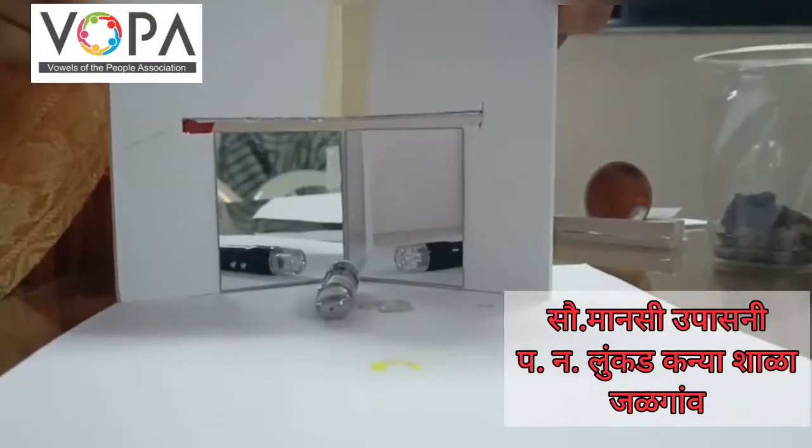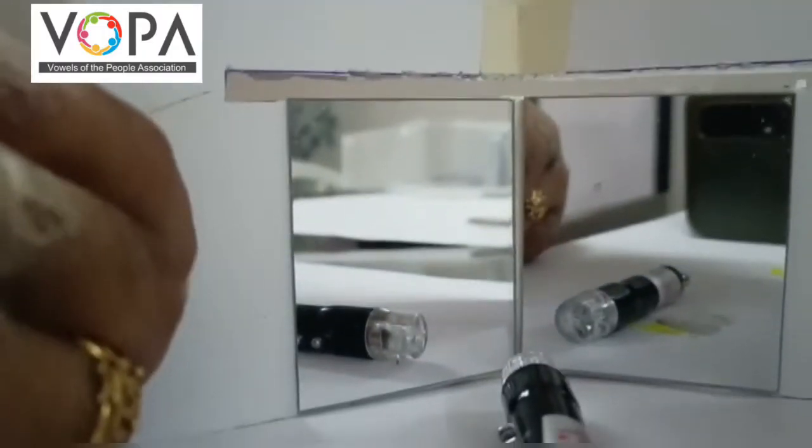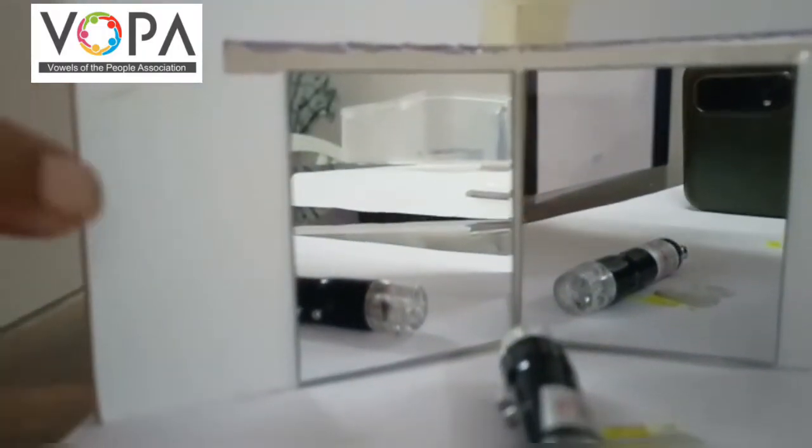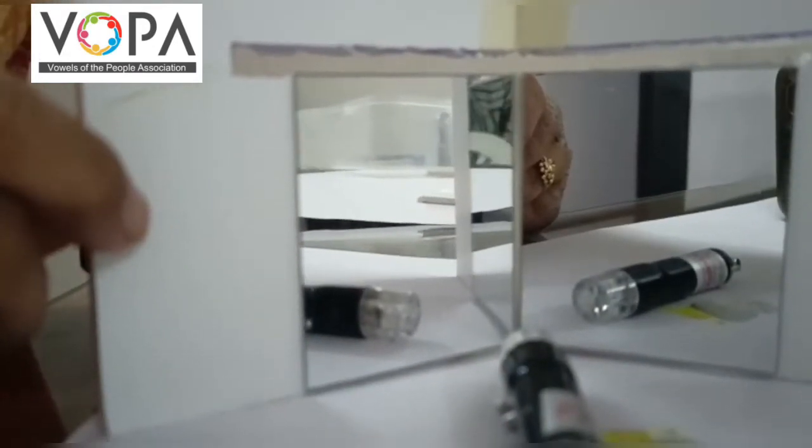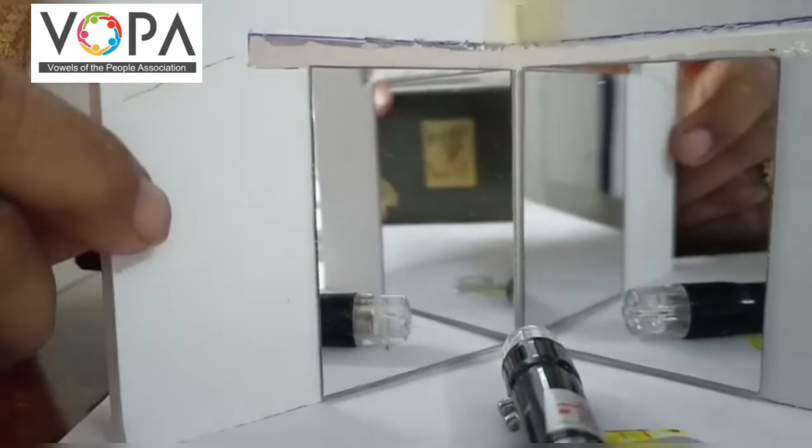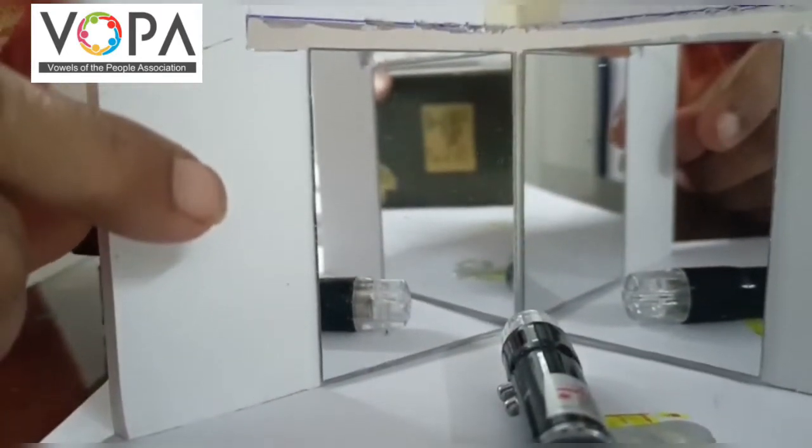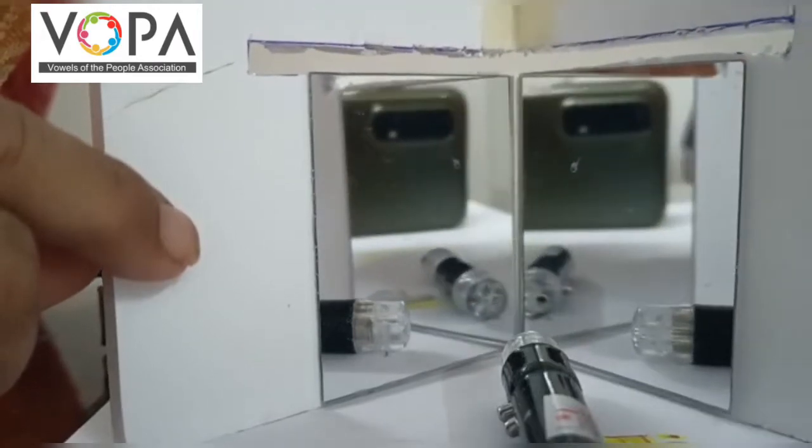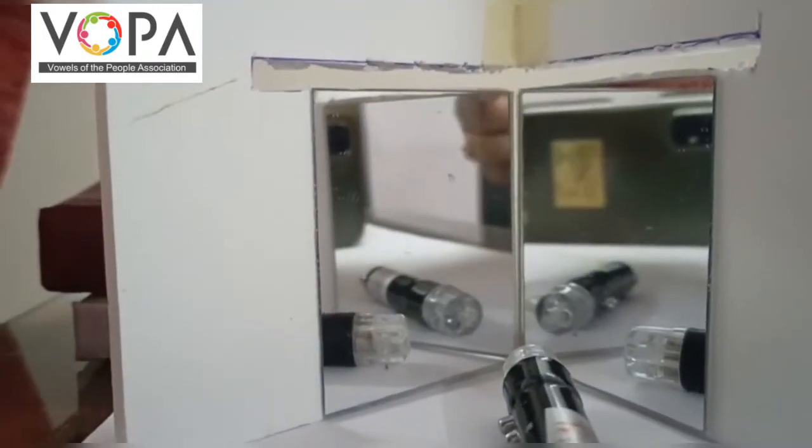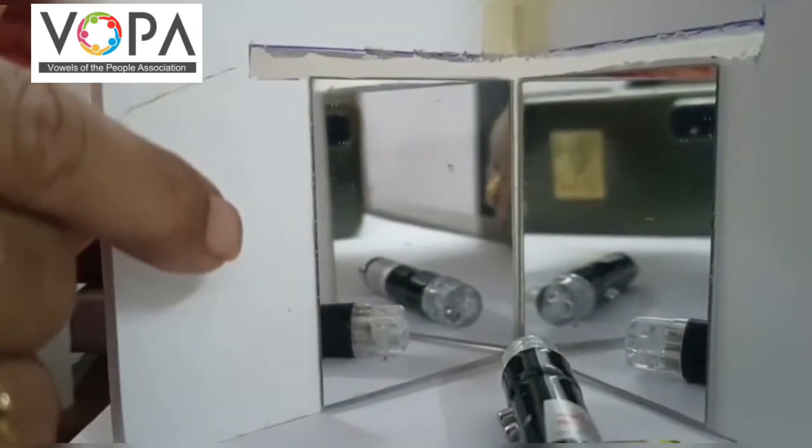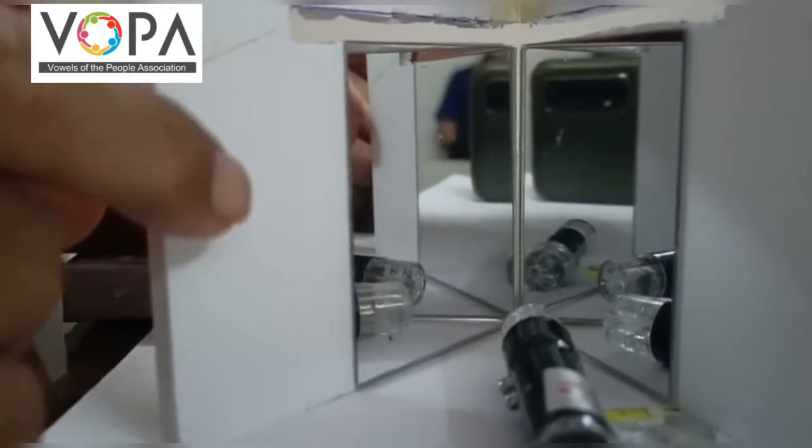Students, let's do a small experiment. We take two mirrors and one object. If we make some angle in between two mirrors, we get different images. As we decrease the angle, we get more number of images.